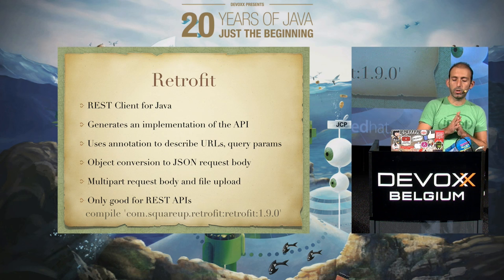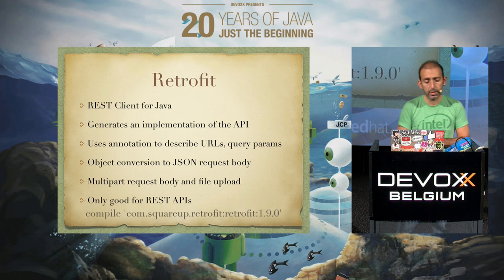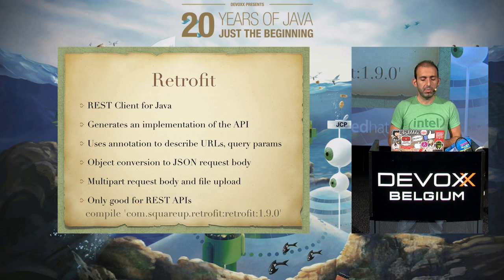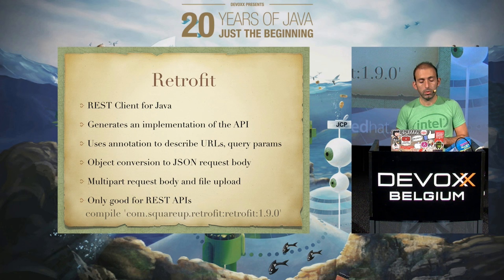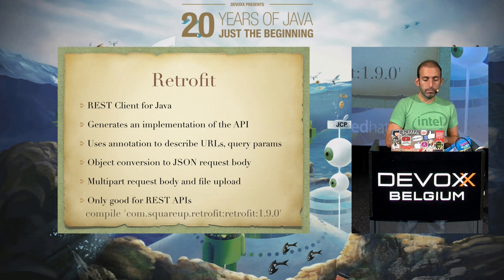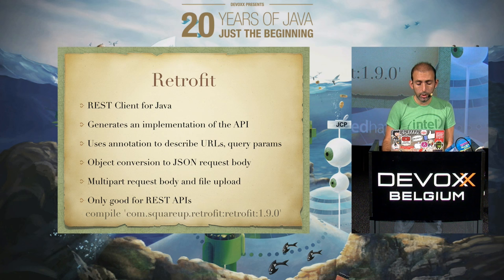Retrofit is a REST client for Java. It uses annotations to describe URLs and query parameters, so it's pretty easy and nice to use. It has support for object conversion to JSON request body, supports multi-part request body and file upload, which is not available in all versions of HTTP client. It's used for REST APIs — if you're planning to do something other than REST calls, it might not be the library you're looking for. The current examples are based on version 1.9, with version 2 in beta available.